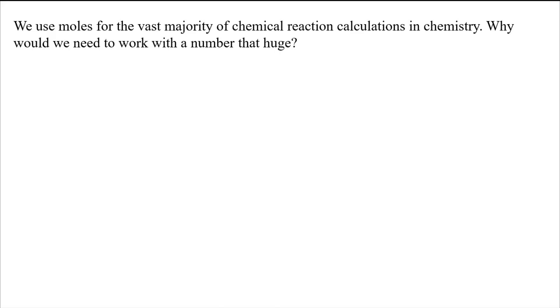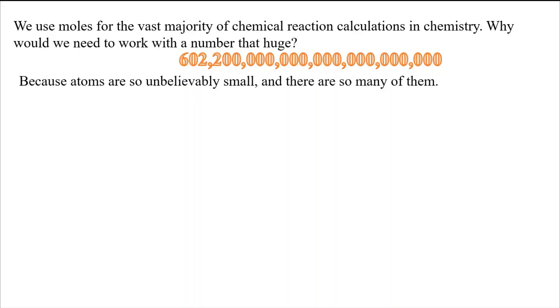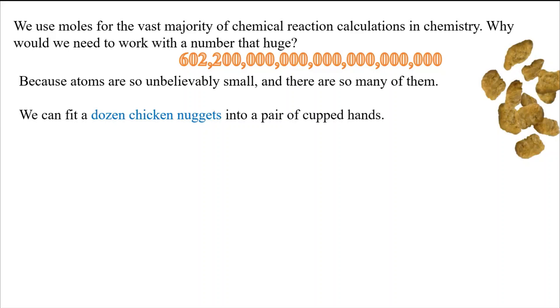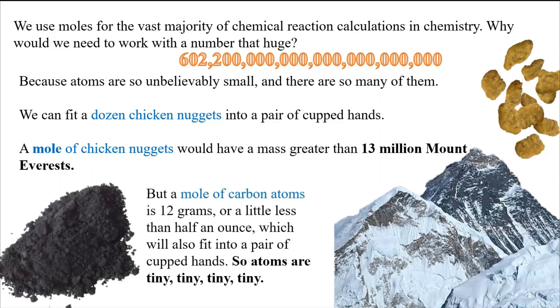The reason we need such a large number is because atoms are just unbelievably small. A dozen chicken nuggets fits in a pair of cupped hands, but a mole of chicken nuggets would have a mass greater than 13 million Mount Everests. Contrast that with a mole of carbon atoms, which is just 12 grams — less than half an ounce — and fits in a pair of cupped hands. So if a calculation gives you a mole of something visible to the naked eye, go back and double-check your answer.